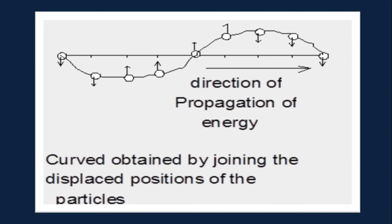This is the curve obtained by joining the displaced positions of the particles. We see while the particles are simply moving up and down, the direction of propagation of energy and disturbance is towards the right.